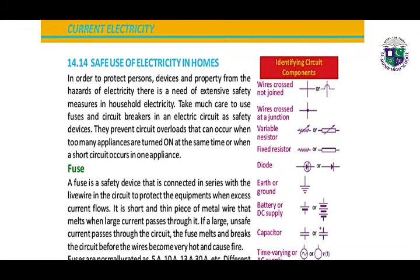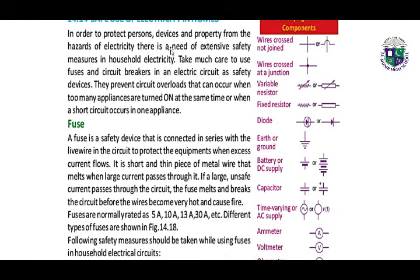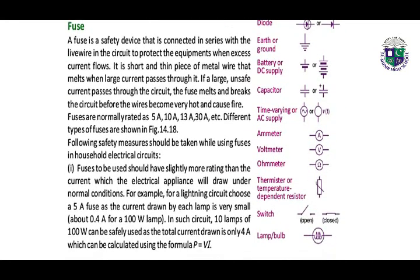Safe use of electricity in homes — in order to protect persons, devices, and property from the hazards of electricity, there is need for extensive safety measures. In household electricity, we use fuses and circuit breakers in an electric circuit as safety devices. They prevent circuit overloads that can occur when too many appliances are turned on at the same time or when a short circuit occurs. A fuse is a safety device connected in series with the live wire to protect equipment. When excess current flows, it is a short, thin piece of metal wire that melts when large current passes through it.